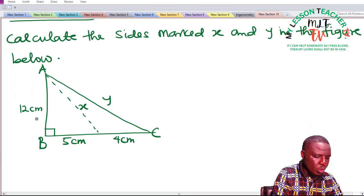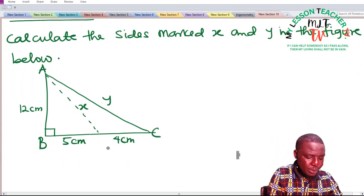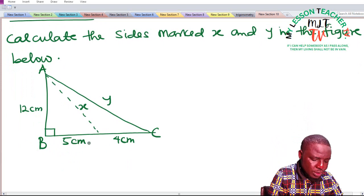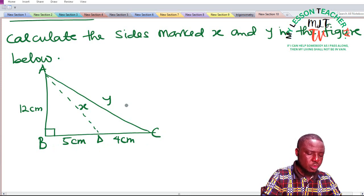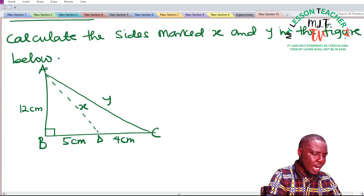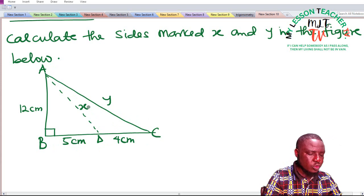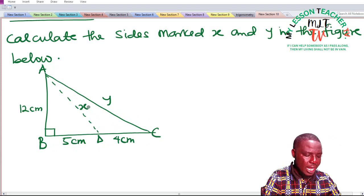Where AB is given to be 12 centimeters, BC is given to be... okay let me put this as D. We have BD to be 5 centimeters and DC is given to be 4 centimeters. We also have AC to be said to be y and AD is given to be x, and we are asked to find x and y.